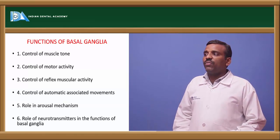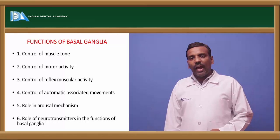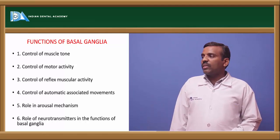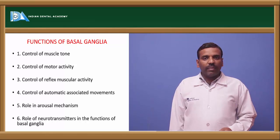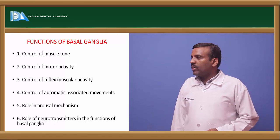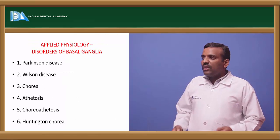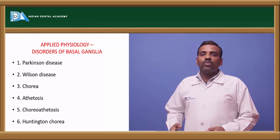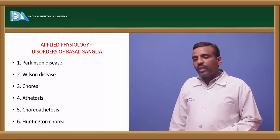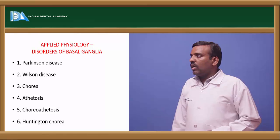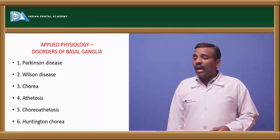Functions of basal ganglia: control of muscle tone, control of motor activity, control of reflex muscular activity, control of autonomic associated movements, role in arousal mechanisms, and role of neurotransmitters. Applied aspects include Parkinson's disease (tremors, shivering), Wilson's disease, chorea, athetosis, and Huntington's chorea.